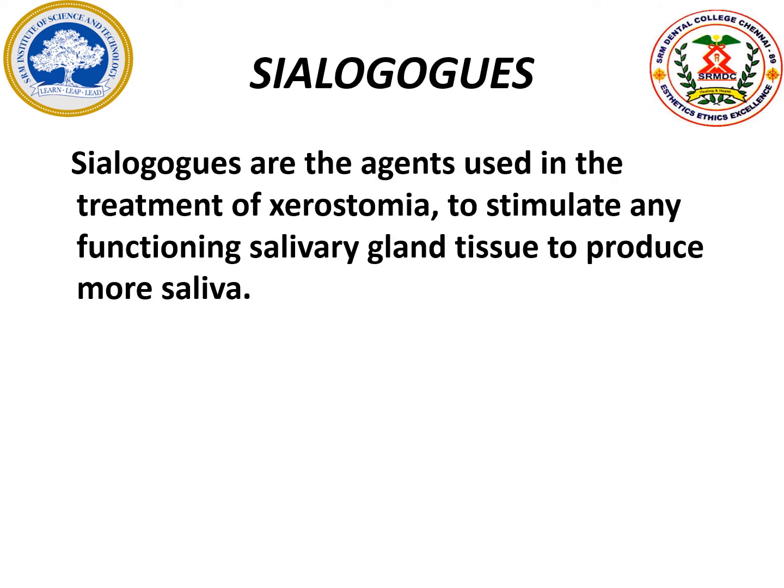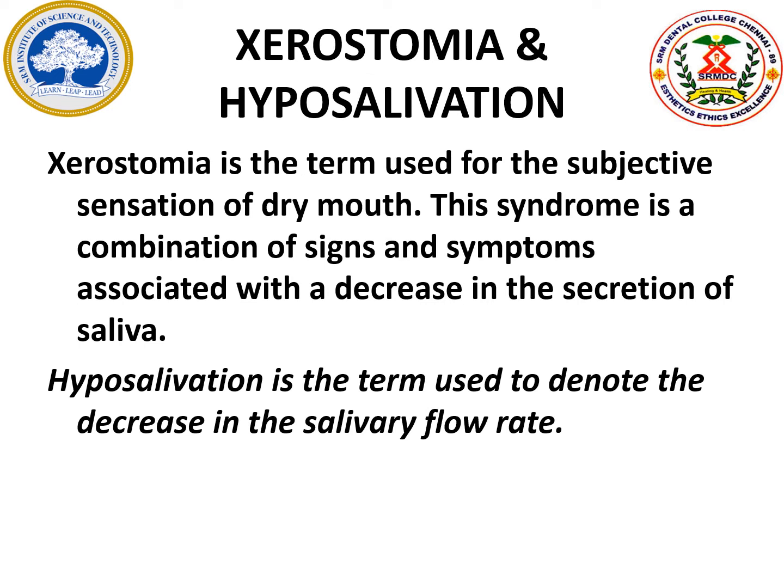Sialogogues. What are sialogogues? These are the agents that are being used in the treatment of xerostomia or dry mouth. When there is xerostomia or dry mouth, when these drugs are being given, they stimulate the functioning salivary gland and tend to produce more saliva. Before we discuss sialogogues, we should have an idea about xerostomia and hyposalivation.